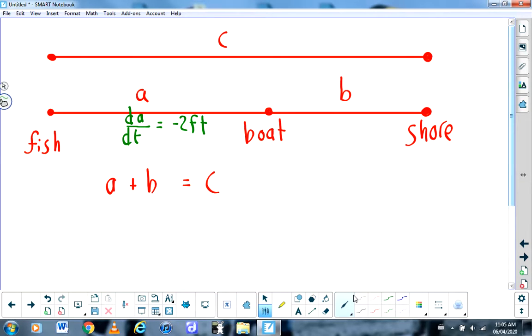And I'm also going to tell you that dB/dt is negative three feet per second. And what that means is that the boat is traveling towards the shore at three feet per second. Now, if I asked you to find dC/dt,